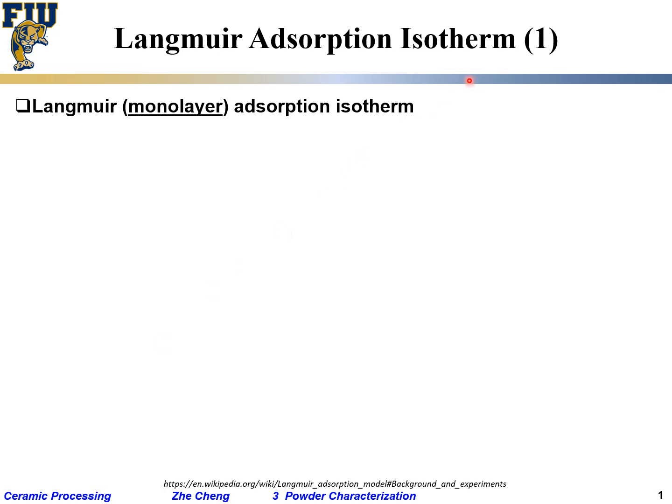Let's talk about the adsorption isotherm from a mathematical point of view — how exactly can we use data from gas adsorption to back-calculate surface area. The first model we are introducing, which is very important for catalysis and also for some ceramic-related applications, is the so-called Langmuir adsorption isotherm.